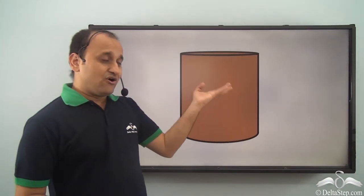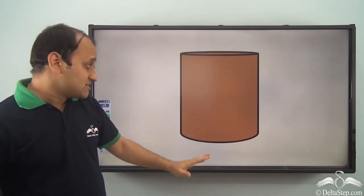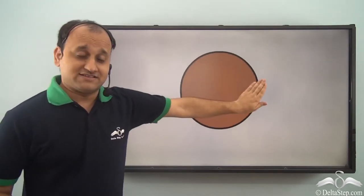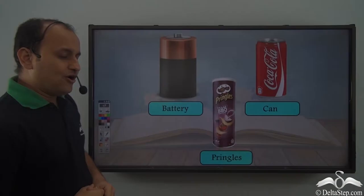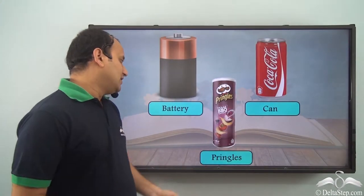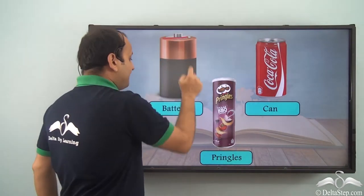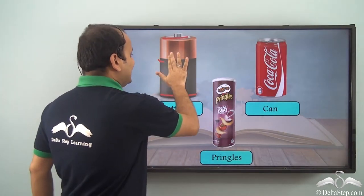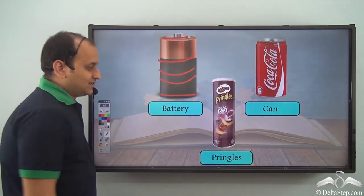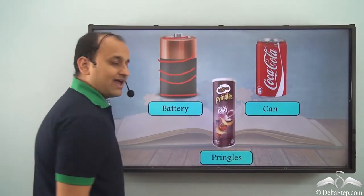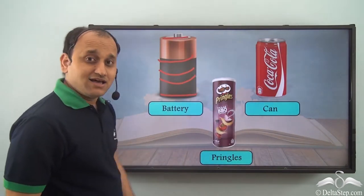This is how a cylinder looks like. Two faces at the top and at the bottom, and then this curved face — so three faces. What are some common examples of cylindrical shape? We have this battery, which has a cylindrical shape — one face, second face at the bottom, and then this curved face, so three faces. Similarly, we have this Pringles container and a cold drink can. Even these have a cylindrical shape.